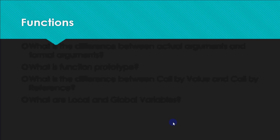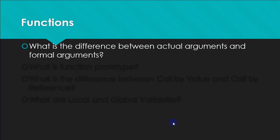One major topic in the syllabus is functions, because classes, objects, and all revolve around functions. A question that can be asked is: what is the difference between actual arguments and formal arguments? The arguments which we pass at the time of calling a function are called actual arguments, and the variables which we receive when we define the function are called formal arguments. For example, if I call swap(a, b), then a and b are actual arguments, but when writing the definition — void swap(int x, int y) — x and y are the formal arguments.